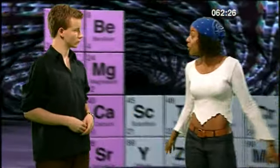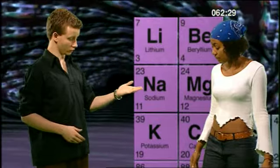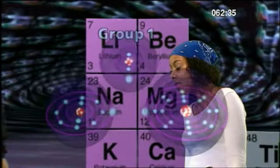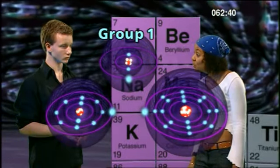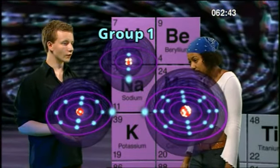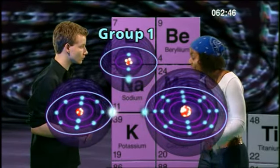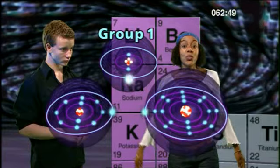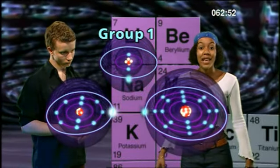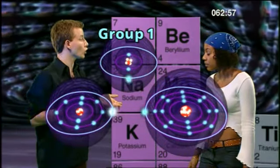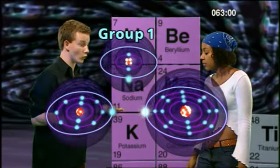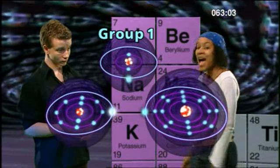The first three elements in group one are lithium, sodium, and potassium. Let's look at their atoms. Can you see any similarities in the arrangement of their electrons? They've all got one electron in their outer shell. Every element in group one has one electron in its outer shell. This means that these elements all react the same way with other chemicals — that's why they're all organised into the same group.